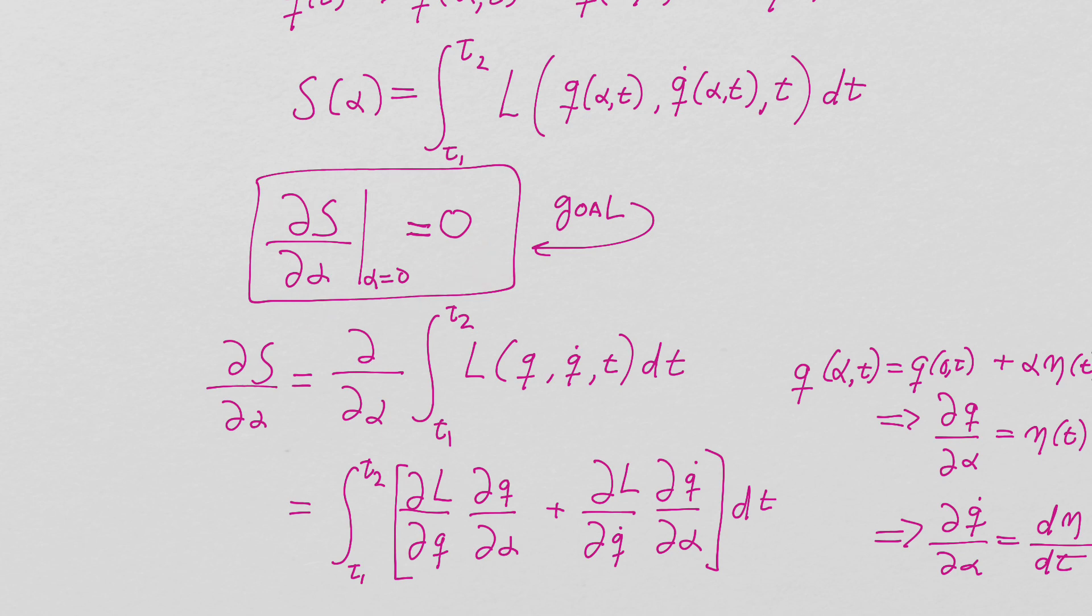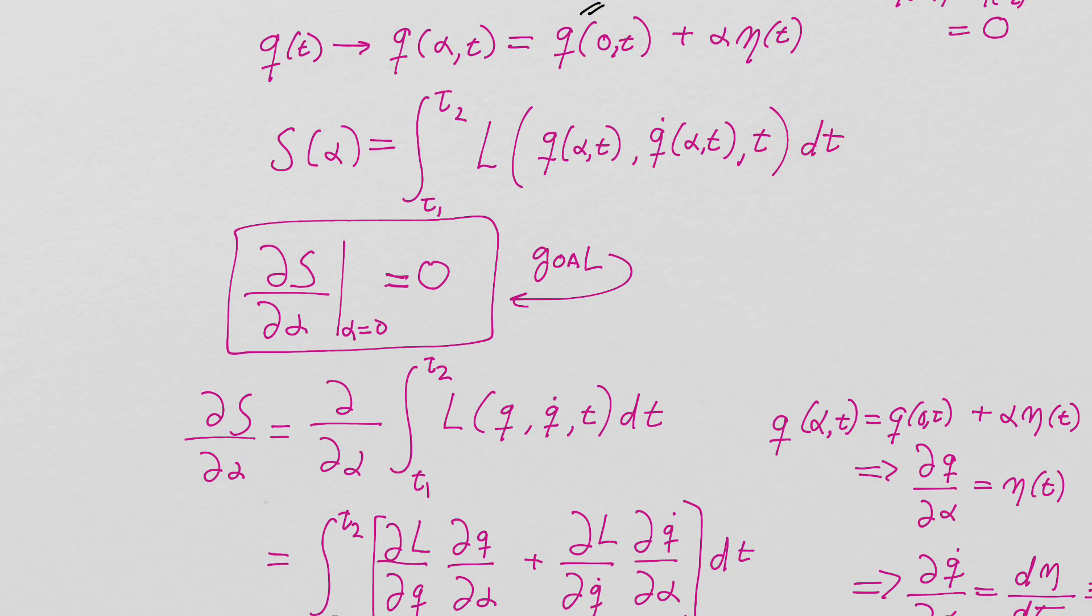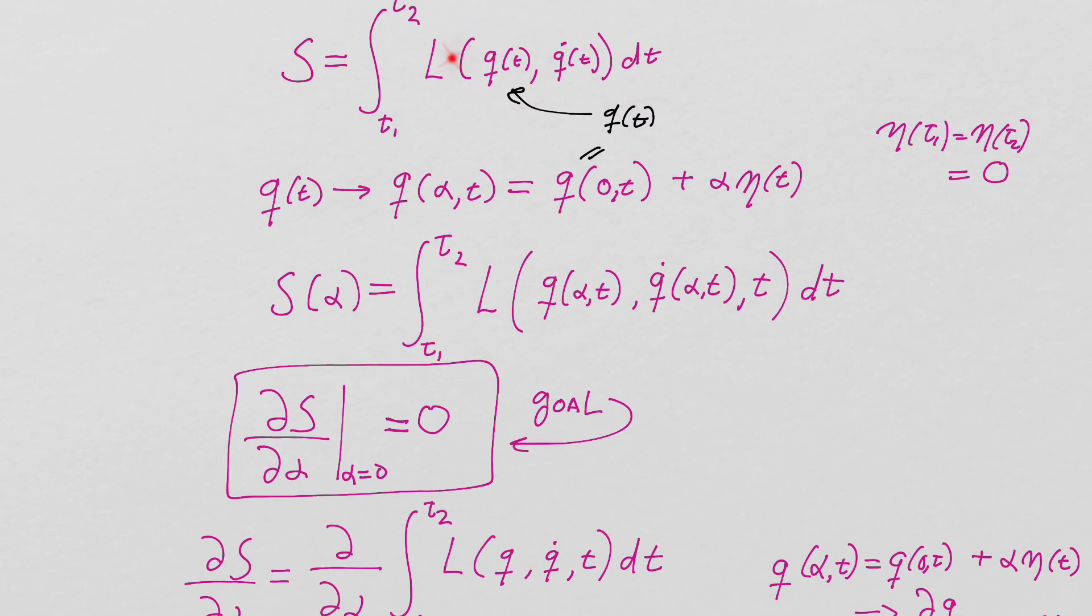So to do this calculation, it's not so hard. We just have to take the derivative of S with respect to alpha. Notice we integrate with respect to t, that clears t, but it leaves an alpha behind in this version of things. So S is now a function of alpha.